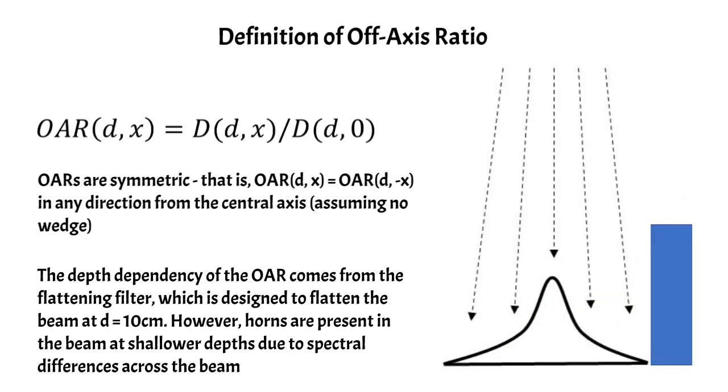But what you can see is that near the center of the beam, the flattening filter is thicker. And because of that, photons in the center of the beam pass through more material, and they're attenuated more, and the lower energy photons are preferentially attenuated, leaving you with more higher energy photons near the center. So you get a beam hardening effect and a beam softening effect as you move towards the periphery.